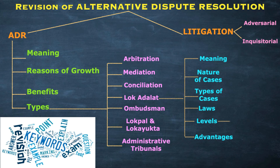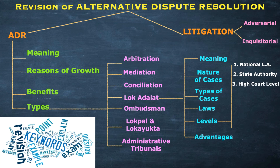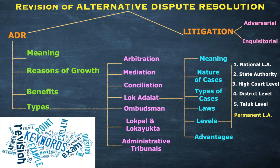Under the heading of levels of Lok Adalat, we studied: first, national Lok Adalat at the national level; second, state authority level Lok Adalat; third, high court level Lok Adalat; fourth, district level Lok Adalat; fifth, taluk level Lok Adalat. These five are on an ad hoc basis. Additionally, there are permanent Lok Adalat and mobile Lok Adalat as separate categories.